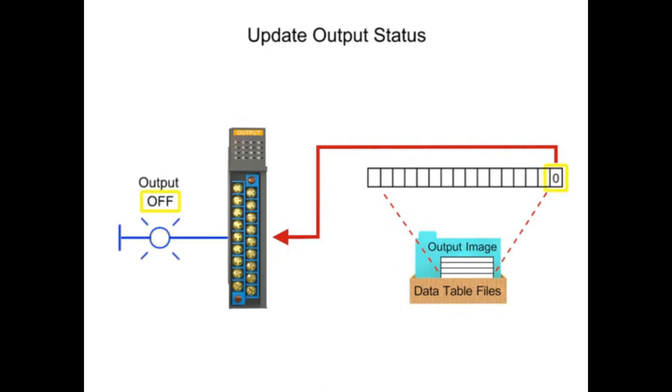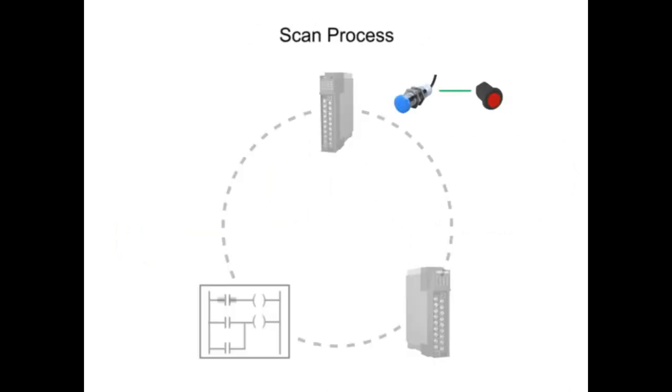We are going to talk about updating output status. I will show you the input and output when the word is high. The output uses relay and transistor outputs. I will show you how to scan the PLC process.